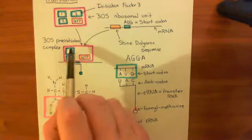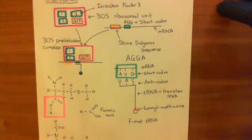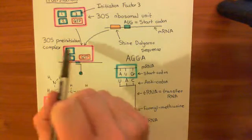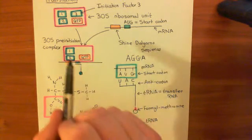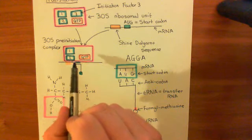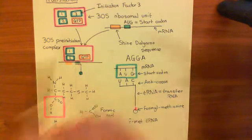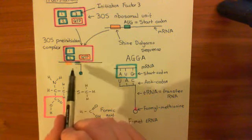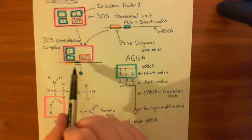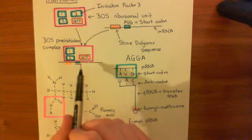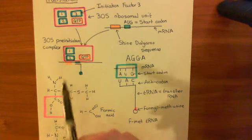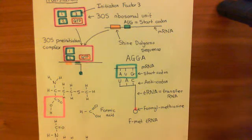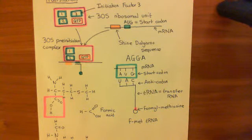So far we've created this 30S pre-initiation complex, which is this 30S ribosomal subunit with initiation factor 1 and initiation factor 2 and this guanosine triphosphate molecule bound to it, along with an mRNA molecule bound and the first aminoacyl-tRNA bound in place, which is the one which has formylmethionine bound to it and has the complementary anticodon to the start codon.